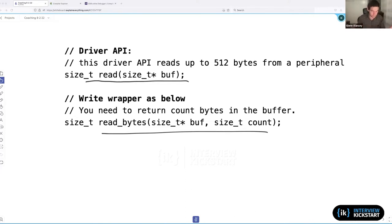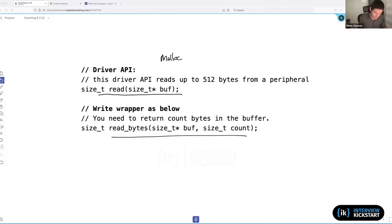This is a kind of class of problems where there's some existing library function - in this case it's read, but it could easily be something like malloc. For this particular example, we have a driver API that reads up to 512 bytes from a peripheral. You pass in a buffer as input and get back the number of bytes that were copied. This is an API that already exists; you don't need to implement it.